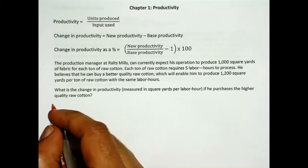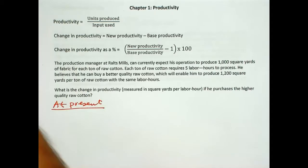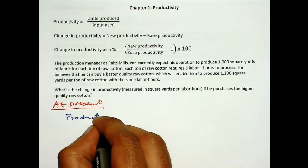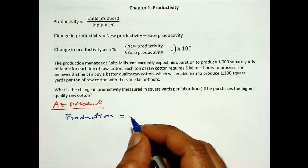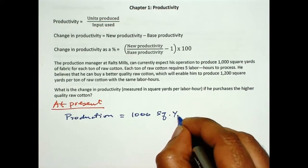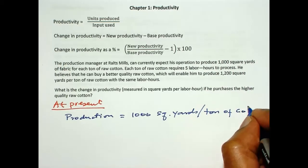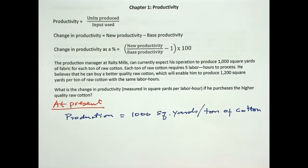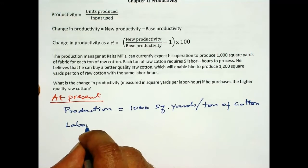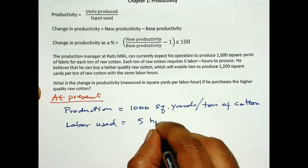So, at present, production is 1000 square yards per ton of cotton. Labor used is 5 hours per ton of cotton.